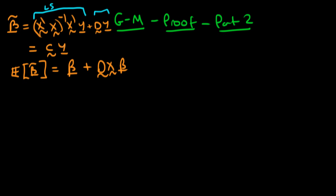We could write this another way — because y appears in both terms, we can write this as some matrix C times y, where C is (X'X)⁻¹X' plus d.